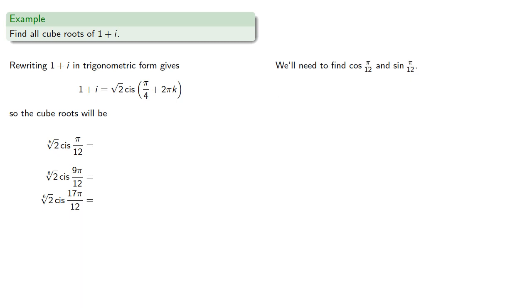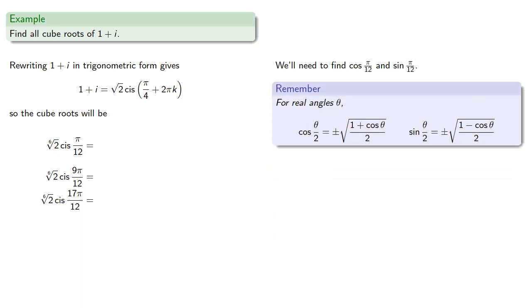And that means we need to find cosine of π/12 and sine of π/12. Fortunately we remember those half angle formulas, and since π/12 is a first quadrant angle, we'll use the positive square root and find.